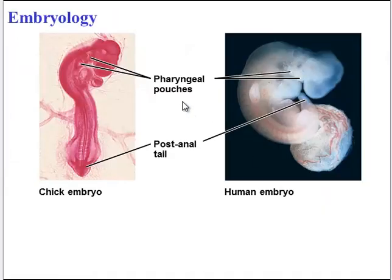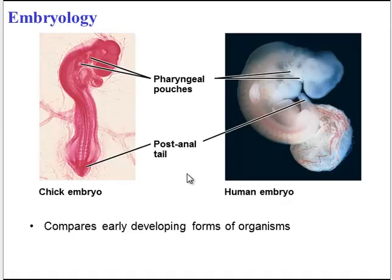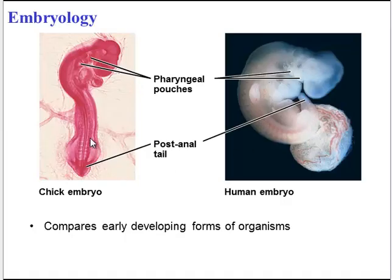Embryology is a particular type of morphology that looks at the development of organisms early in life. This can be helpful because sometimes adult organisms don't show homologous structures, but you can see homologies in their developmental form. For example, you can see a post-anal tail present in a human embryo, but that disappears in the adult form. We can use that to show evidence of common ancestry with chickens and other organisms that keep their tails.